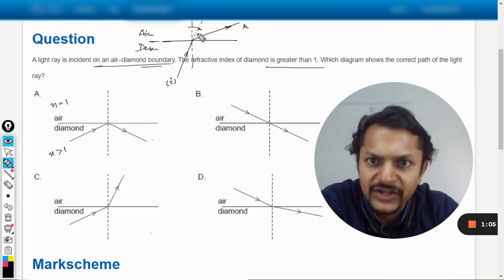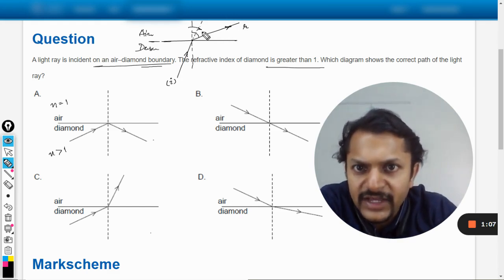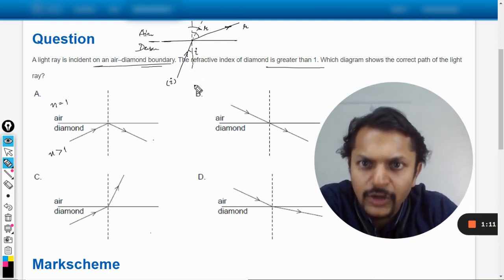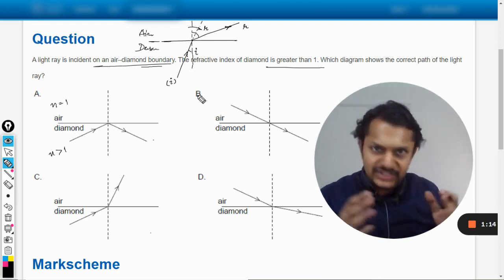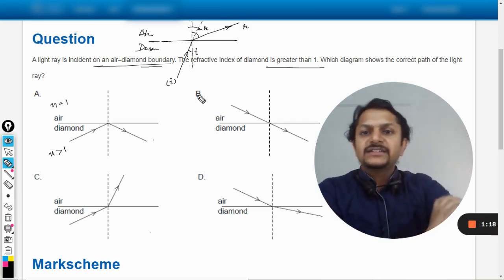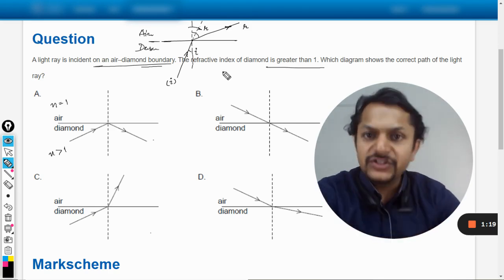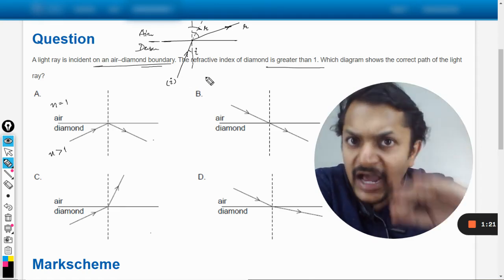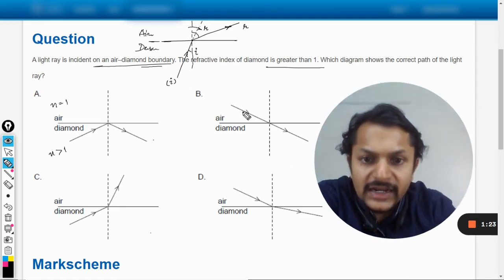So this will be bending here. This angle is known as angle of refraction and this angle will be known as angle of incidence. Snell's law would be applicable there. Now this should be the diagram in the case of diamond and the air also. Let us see from these options if that is available.